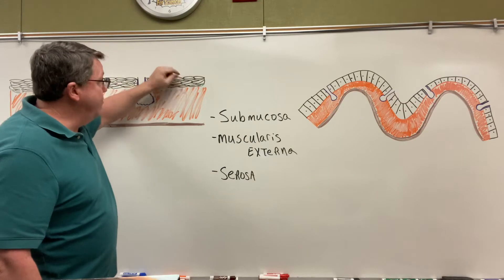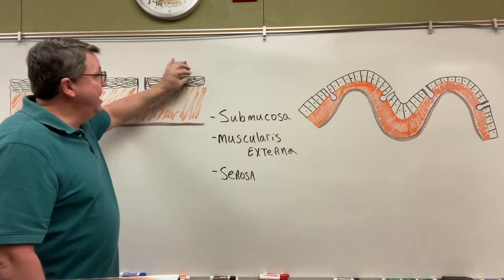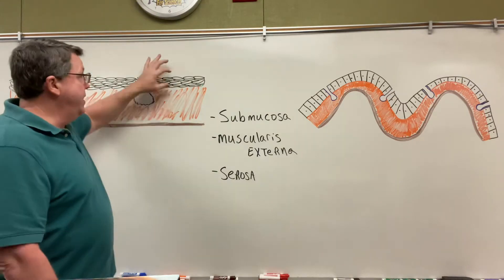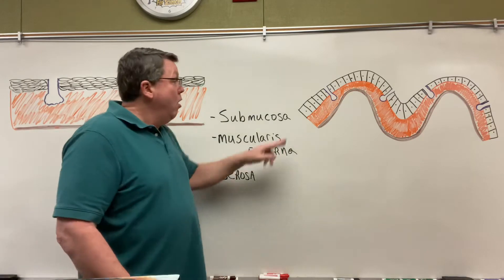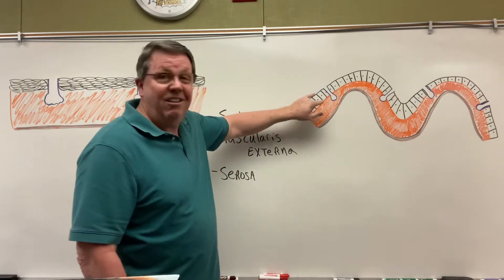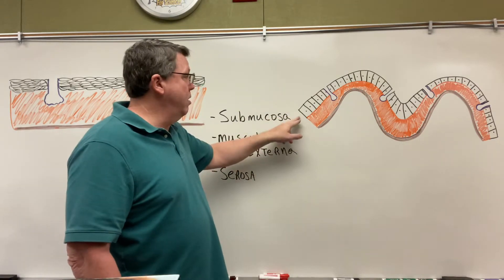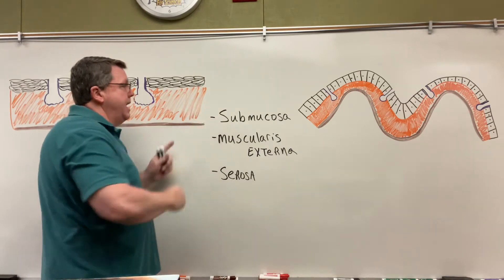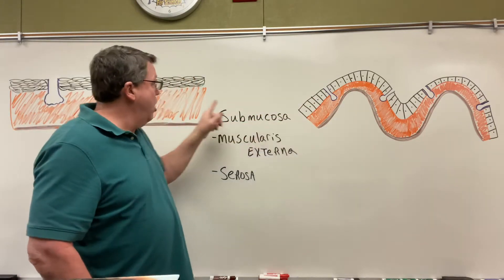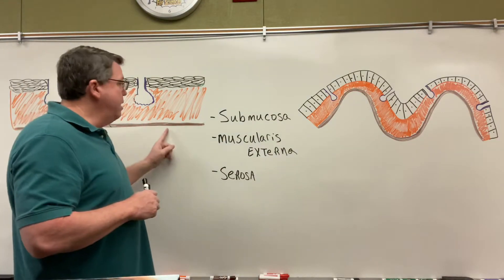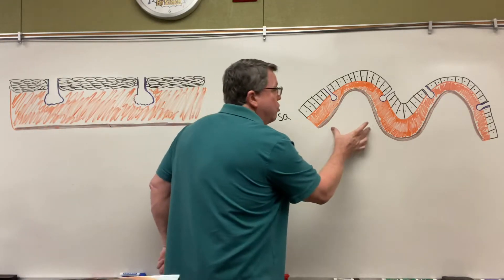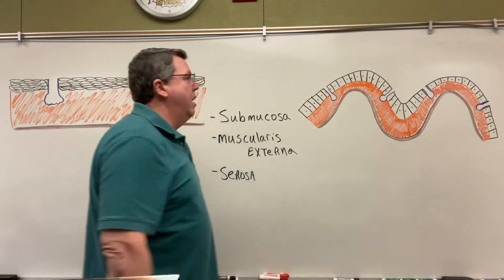Up here you'll notice many layers, which is called stratified. These are flat cells — flat cells are called squamous — so this is stratified squamous epithelium. Over here you'll notice only one layer of cells, called simple. They're tall and rectangular, shaped like a column, so we call this simple columnar epithelium. Underneath this we have connective tissue called the lamina propria, and at the bottom we have the muscularis mucosa, which can contract to cause folds seen in the small intestine.